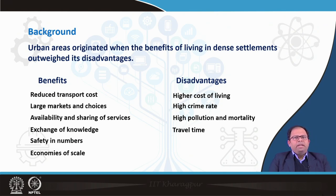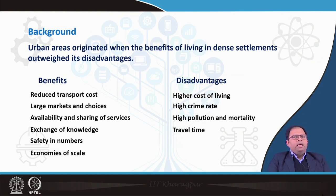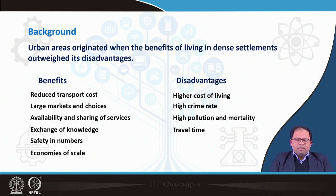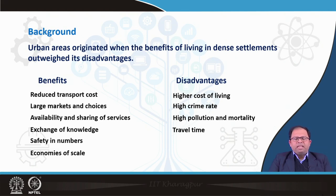These were the benefits based on which urban areas started growing. Some disadvantages were also there — for example, because it is an urban area, the price of land was higher compared to rural areas, so the cost of living also increased. When so many people lived together, that also led to higher crime rates, higher pollution, and more mortality. There was also another aspect in terms of transportation: living in a congested city, travel time from one zone to another actually increased because the roads were congested. Overall though, the advantages outweighed the disadvantages and urban areas gradually kept growing.